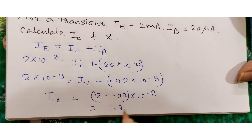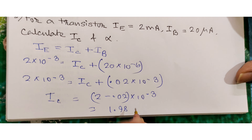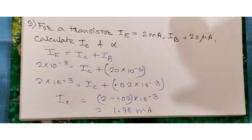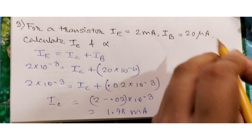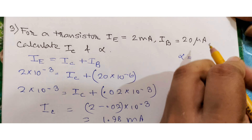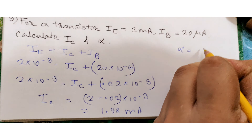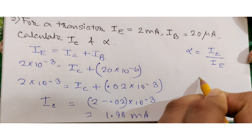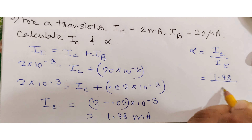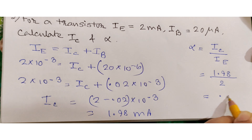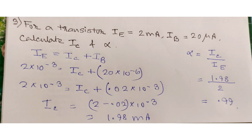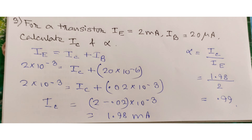IC equals 2 minus 0.02, times 10⁻³, which is 1.98 × 10⁻³ amperes, or 1.98 milliamperes. Now to calculate alpha: alpha equals IC divided by IE, so 1.98 divided by 2, giving alpha equals 0.99. That's how we calculate IC and alpha.